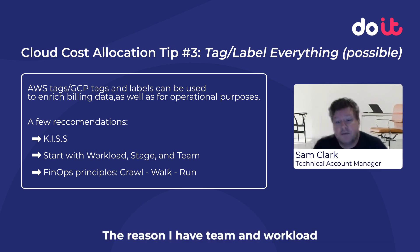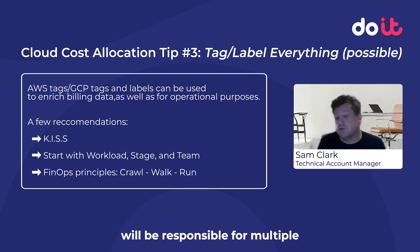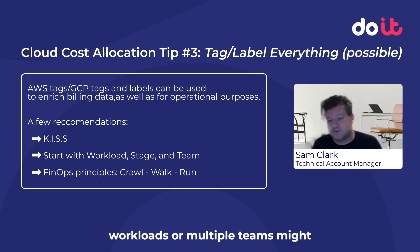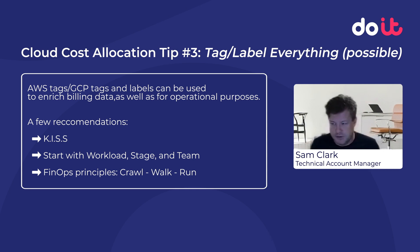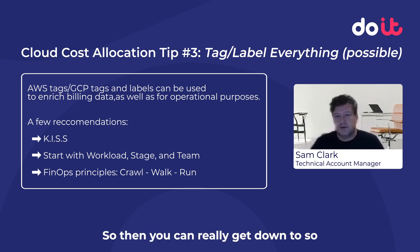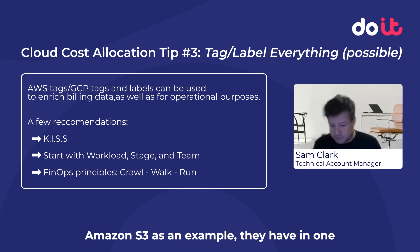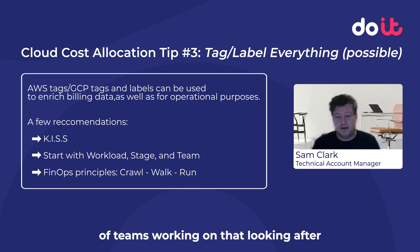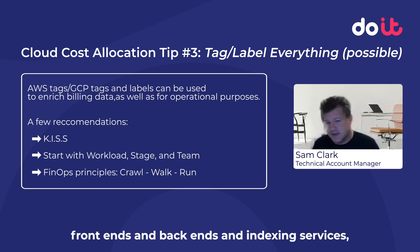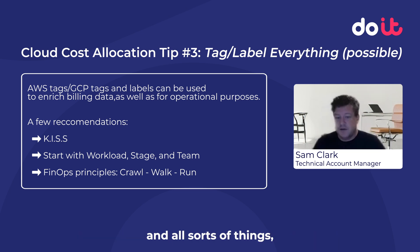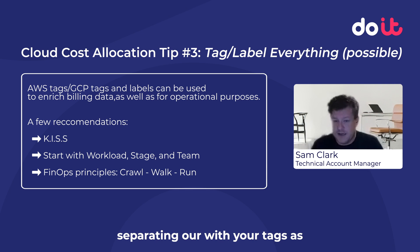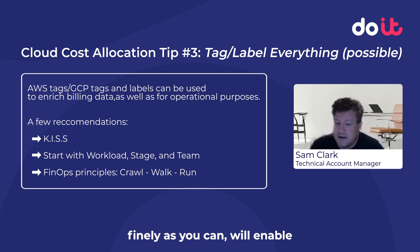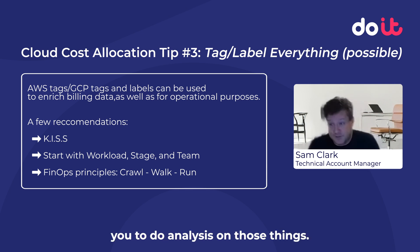The reason I have team and workload is because sometimes one team will be responsible for multiple workloads, or multiple teams might be responsible for one workload. Amazon S3 is a good example — in one product or project, they have hundreds of teams working on that, looking after front ends, back ends, indexing services, and all sorts of things. Separating out with your tags as finely as you can will enable you to do analysis on those things.